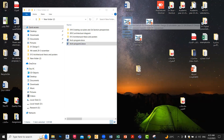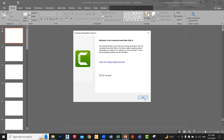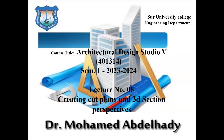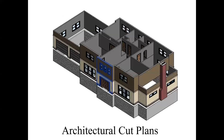Now we will move on to the next topic: how to make 3D cut plans. I want to know what cut plans are and how to create a 3D cut plan. The lecture topic: we will talk about introduction — what is a 3D cut plan, cut plan in perspective, cut plan and 3D section in perspective. The types: camera setup in Revit. This is what a cut plan looks like — it gives me a 3D sectional perspective, which is very useful.